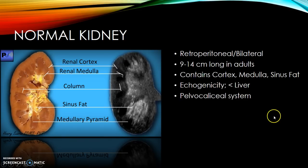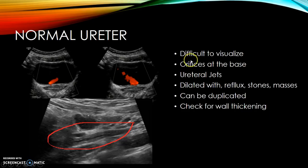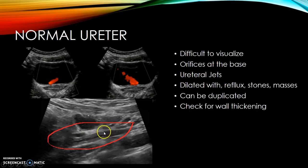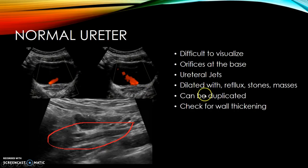Normal ureters are usually difficult to visualize unless you use a high-resolution transducer, and even then they can be hard to see if they're not dilated. When dilated, they become visible — here's one with wall thickening in a patient with an infection. You can use Doppler to see ureteral jets, which is urine entering the bladder in real time. Ureters are usually dilated due to reflux, stones, or masses, and can be duplicated. Check for wall thickening when scanning.